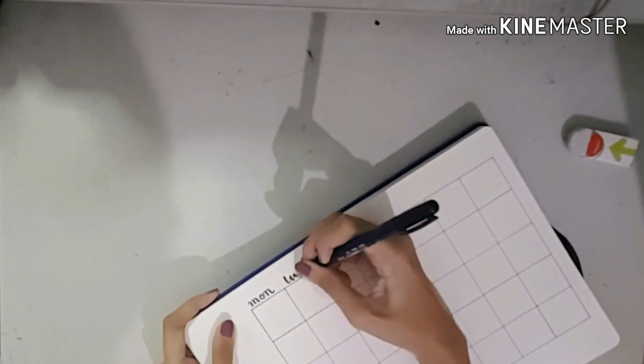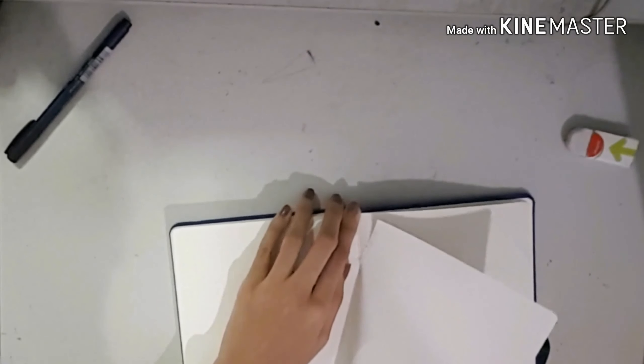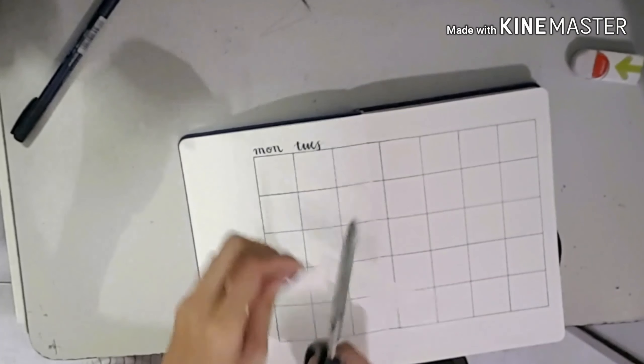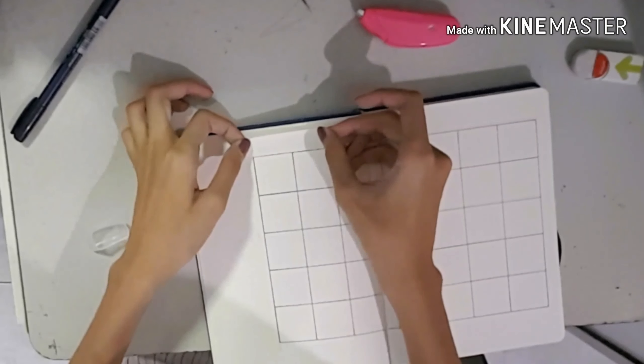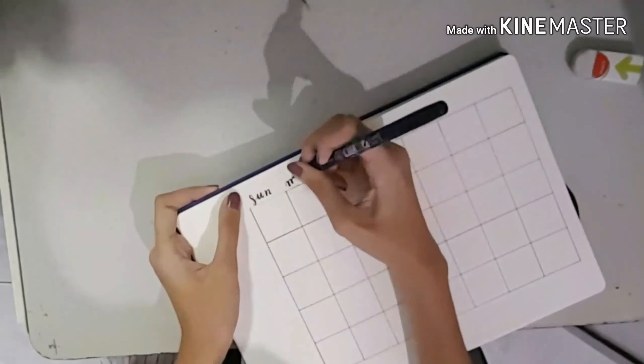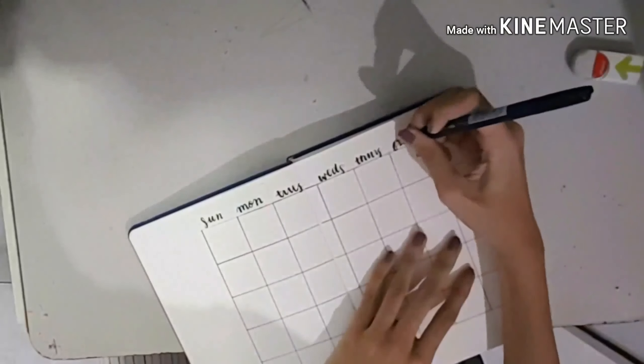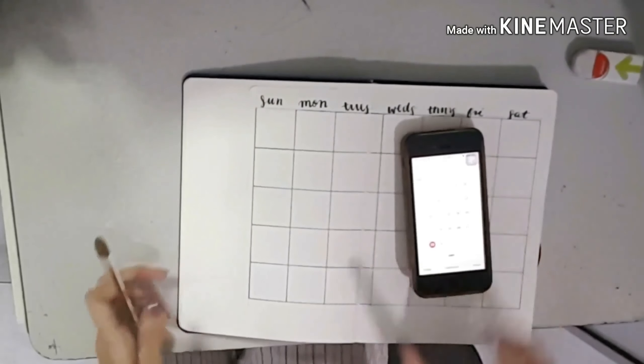As you guys can see, I messed up and started with Monday when I'm used to starting my calendar with Sunday. So I tore a piece of paper from my bullet journal and pasted that on top of my mistakes, and it looks good as new. I wrote Sunday to Saturday, and then I just referred to my calendar on my phone.